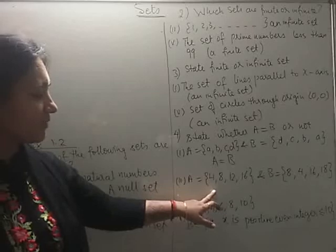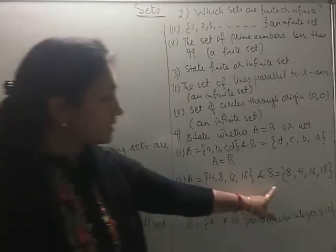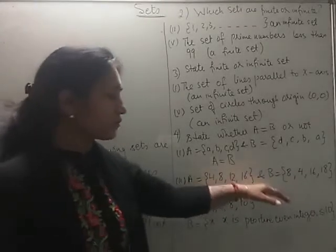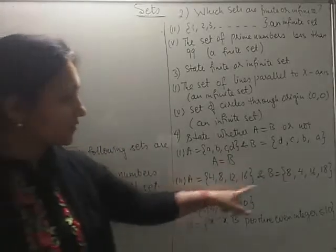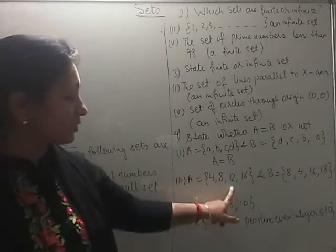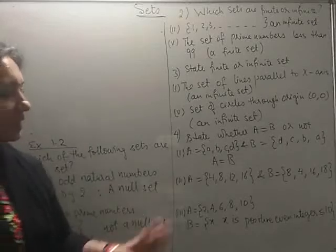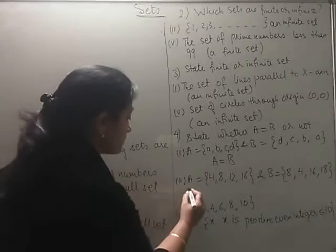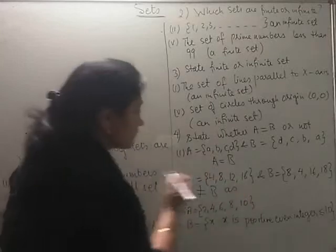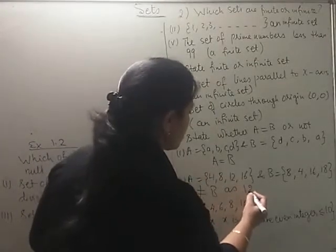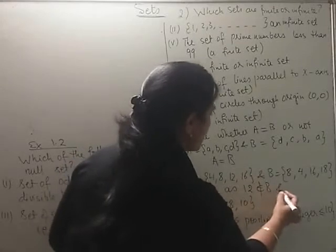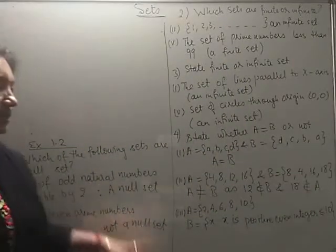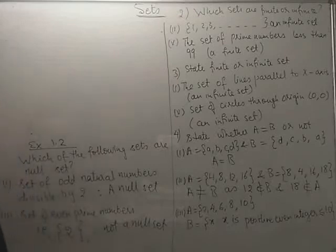Then the next one. Set A is given to be having elements 4, 8, 12 and 16. B is having elements 8, 4, 16 and 18. So we will quickly check whether all the elements of A are in B and the elements of B are in A or not. 4 is available at both the places, 8 is available at both the places. But you can see 12 does not belong to B. In the same way 18 does not belong to set A. So we can write A is not equal to B and we can justify also because 12 does not belong to B and 18 does not belong to A. We could locate one more element in both the sets which were not belonging to the other set.